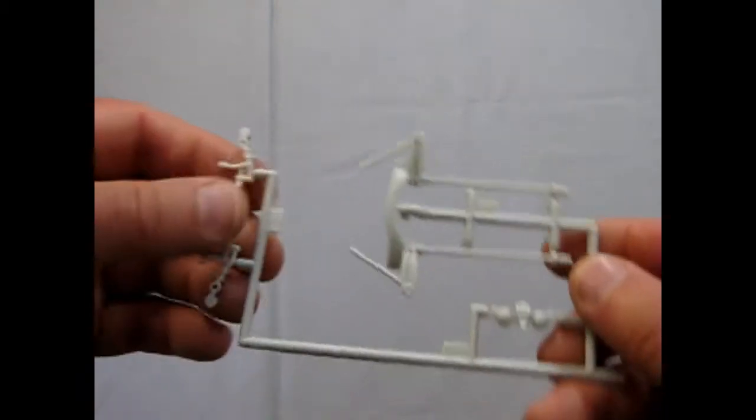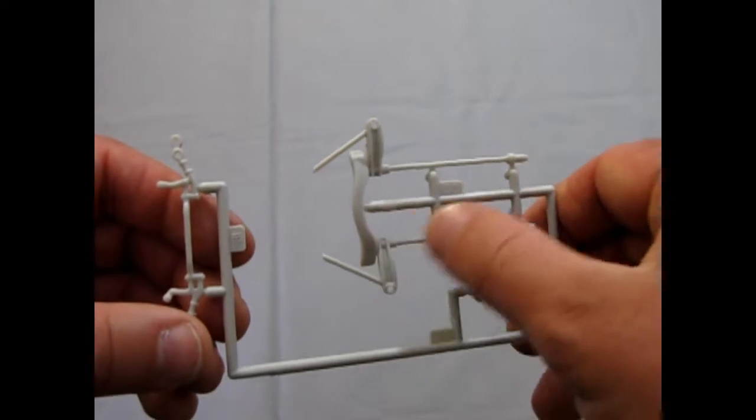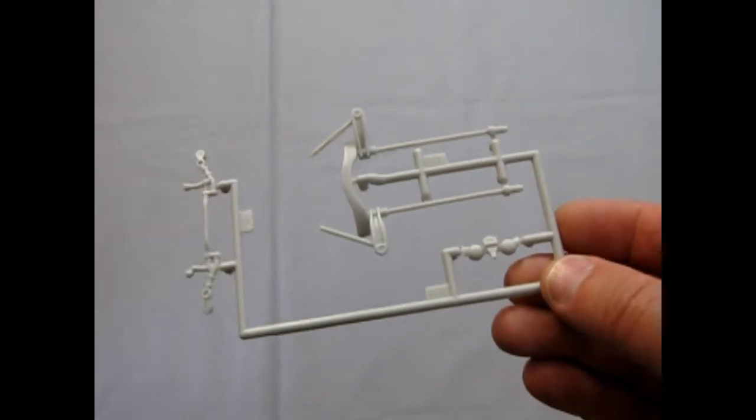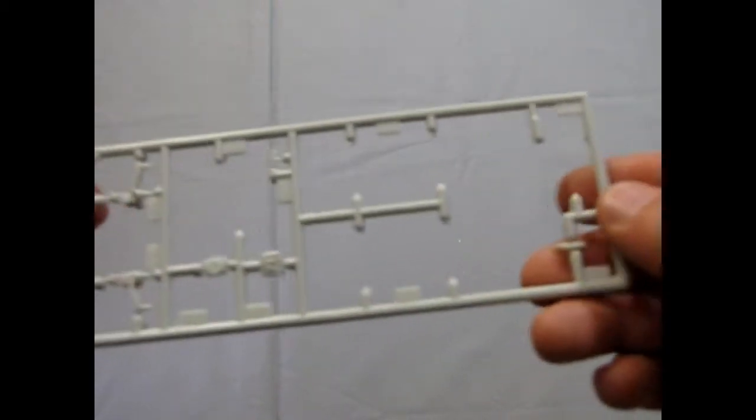There's the front torsion bar suspension. The springs are actually in these bars. They've got a twisted spring inside. One of the Plymouth things.